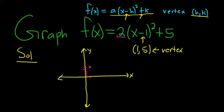Here a is 2, and because it's 2, it's positive, so it's going to open up. So this parabola opens up, so it's going to look like a u.